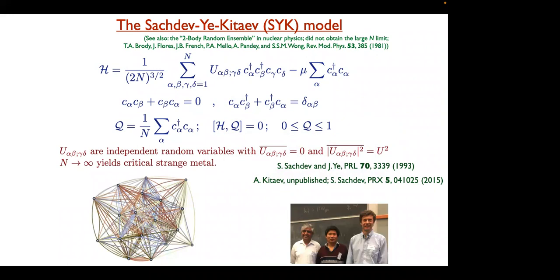I cannot give you the exact answer — that's just too complicated. This matrix acts on a space of dimension 2 to the N, because each fermionic state can either be empty or occupied, and there are N of them, so there are possibly 2^N states. There is one operator that commutes with the Hamiltonian, which is just the total number of particles normalized by the number of sites, and this has to be between zero and one.